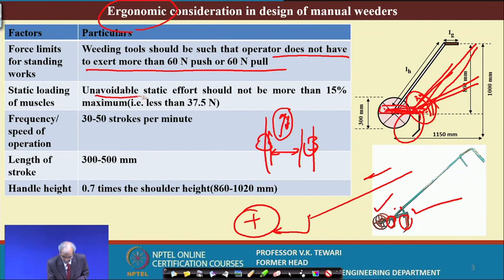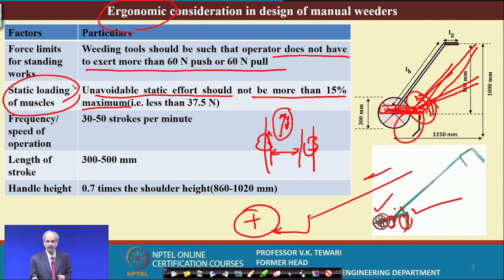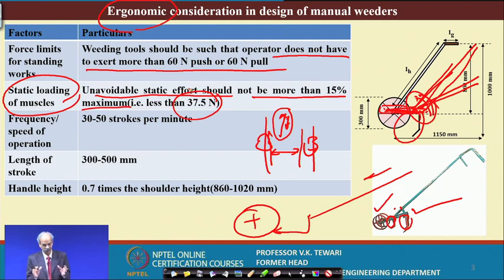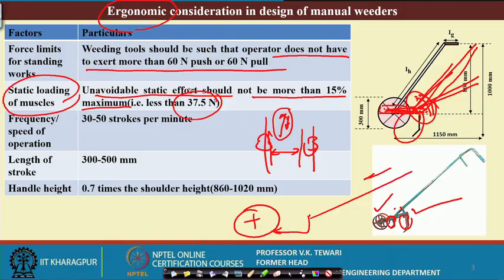From literature, the push force should not be more than about 6 kg, as this has to be operated for a longer duration of time. We also need to work out work-rest cycles — how long the person should operate and when to rest, so that output is more and the person is comfortable and safe. Static effort on the muscles should not be more than 50 percent of maximum, which comes to about 37.5 Newtons. The frequency of operation, depending on the ability of the person, is about 30 to 50 strokes per minute, which is most optimum.